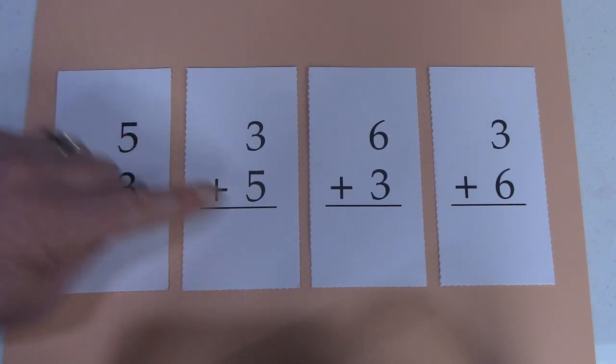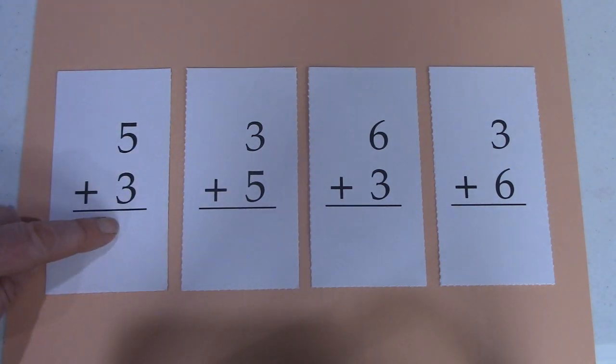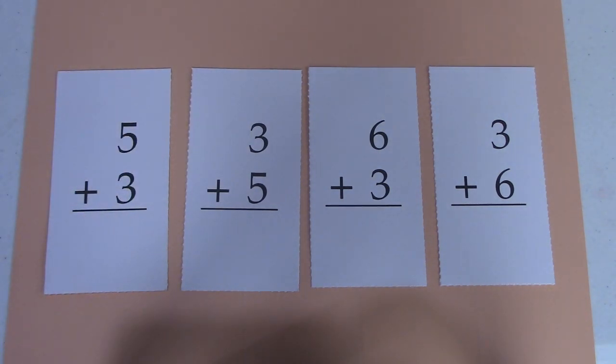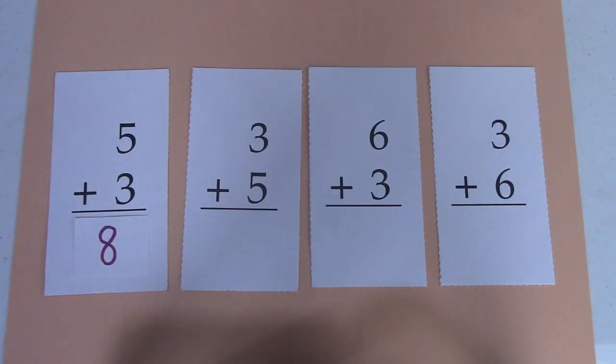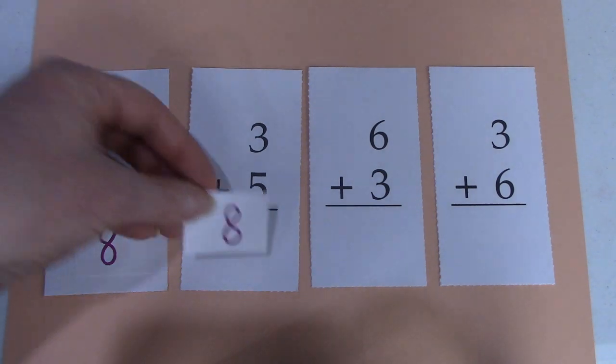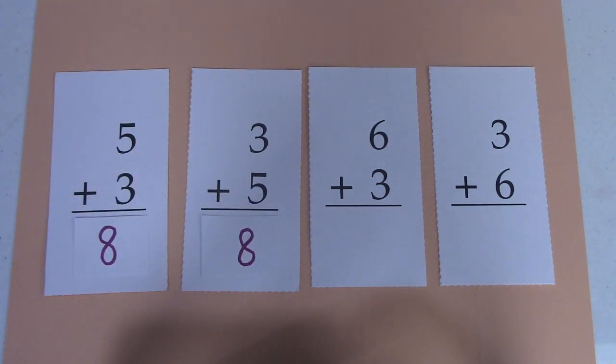There's a 5 on the top here and a 5 on the bottom. A 3 on the bottom and a 3 on the top. They're switcheroo. Let's see if the answer would be the same. 5, 6, 7, 8. The answer to this question is 8. 5, 6, 7, 8. The answer to both of them is 8. Our switcheroo facts have the same answer.